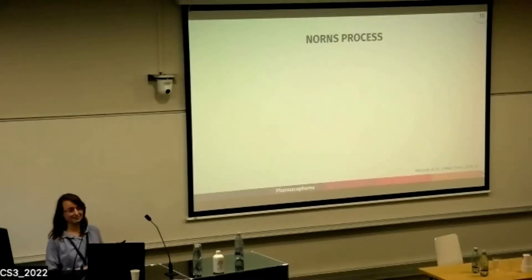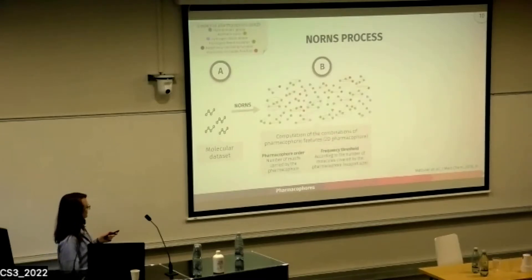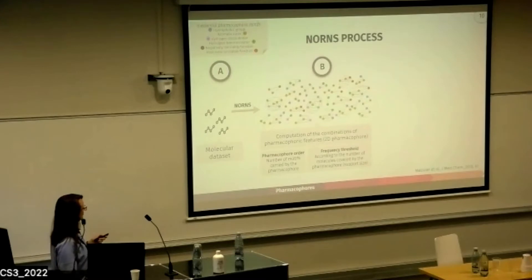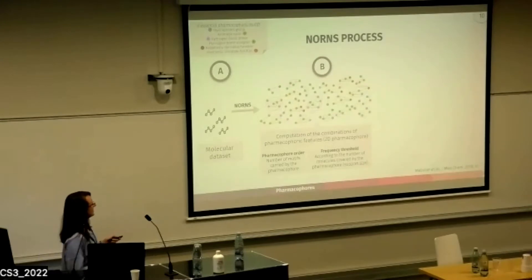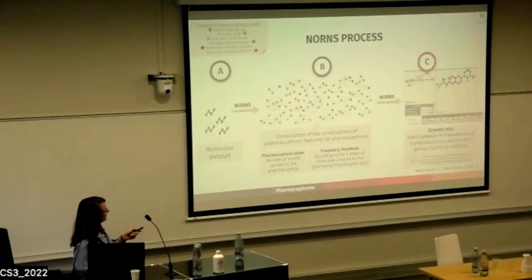Let me show you how NONS processes. First, we give NONS a molecular dataset, typically an SDF file. NONS then computes every combination of pharmacophoric features — these are topological pharmacophores — knowing that there exist six essential pharmacophoric motifs. At this stage we can apply two constraints: the pharmacophore order, keeping only pharmacophores bearing a certain number of motifs, and a frequency threshold for how many molecules must be covered.